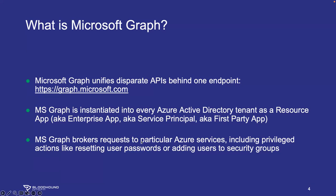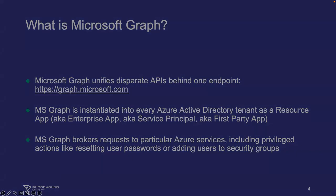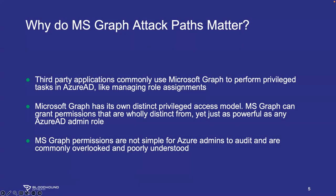The way MS Graph works is it brokers requests to particular Azure services, and those requests can include privileged actions like resetting user passwords, adding users to security groups, activating role assignments, adding secrets to service principals — all kinds of fun stuff. Very attractive to attackers. Where you will see MS Graph app role assignments being very commonly used are with third-party applications that use these to perform privileged tasks like managing role assignments, very commonly via an MS Graph app role assignment for their own service principal. So that creates attack paths.